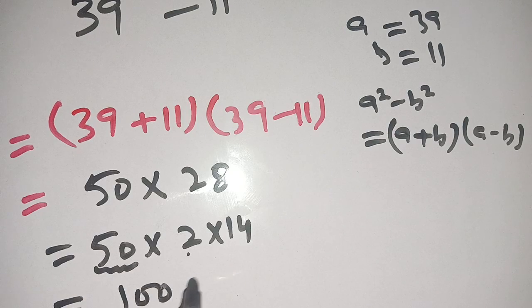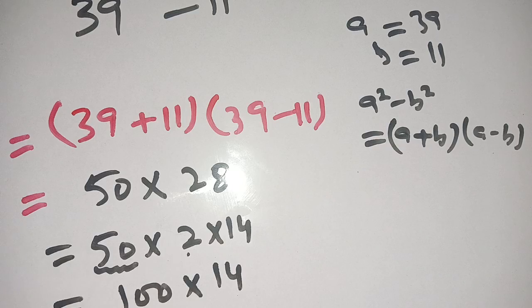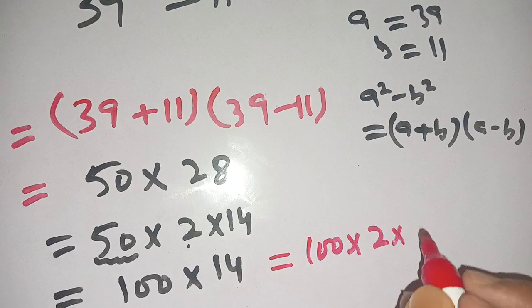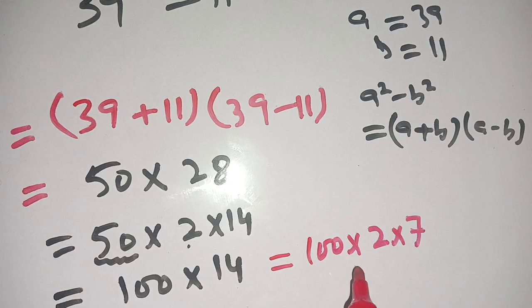Now we break down 14 as 2 times 7. Now we multiply 100 by 2, it becomes 200 times 7.